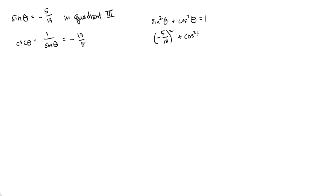Sine is negative 5 thirteenths, so we're going to square that. Plus cosine squared theta equals one. When I square negative 5 thirteenths, I get 25 over 169. Plus cosine squared theta equals one. So cosine squared theta equals one minus 25 over 169.